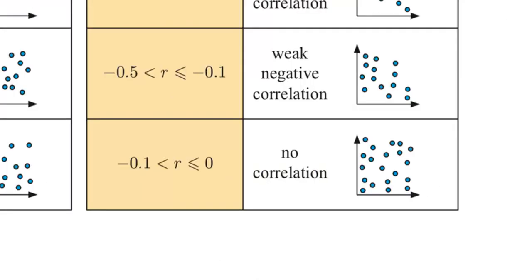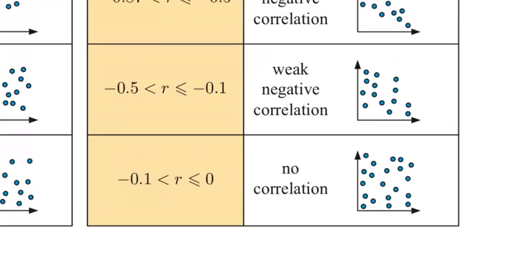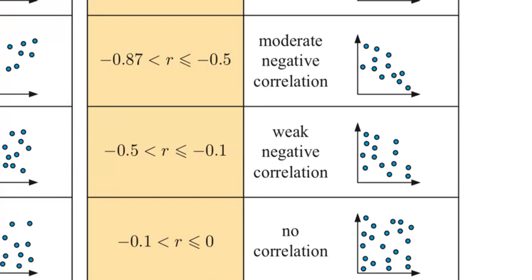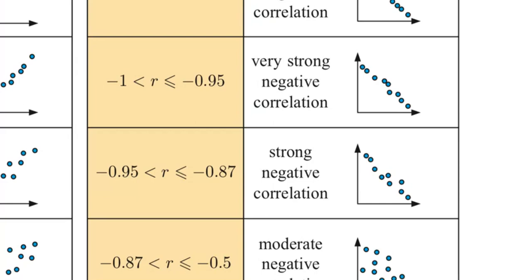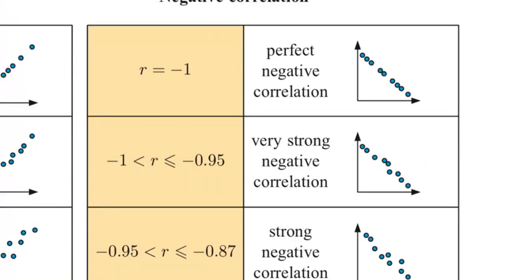Now, then, as we go then past zero, and we start to get a, if you like, larger negative number, we're tending towards one. We're going to get more and more of a correlation until at R is equal to minus 1, we have a perfect negative correlation.